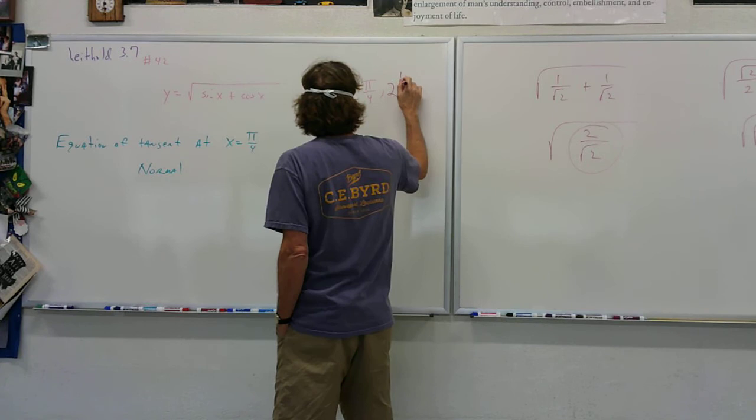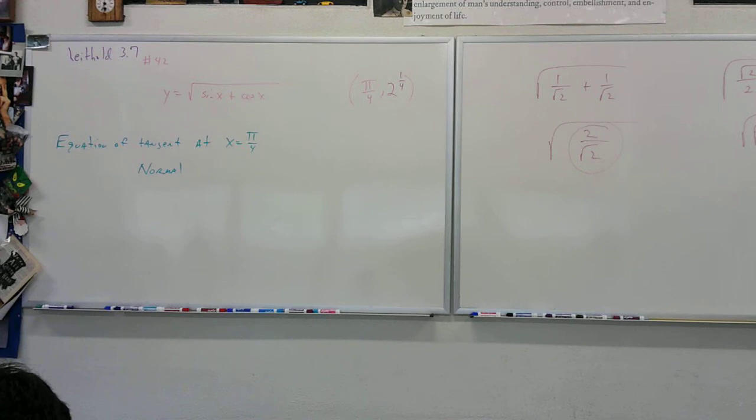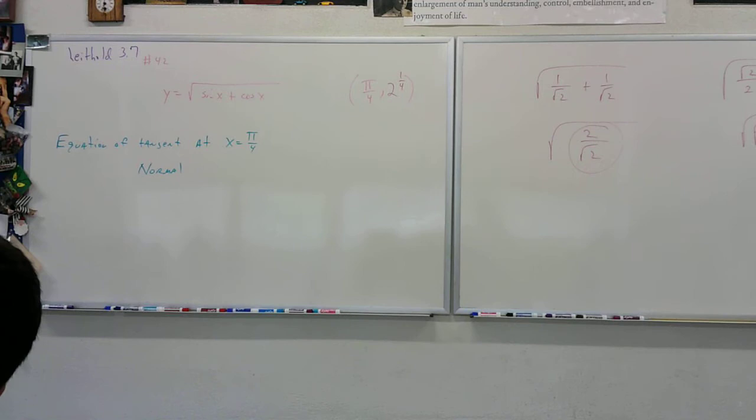All you have to do now is find the slope. In order to find the slope, you must take the derivative, and that's a big chain rule. So you put it all in parentheses to the 1/2 — big power rule. You find the slope.